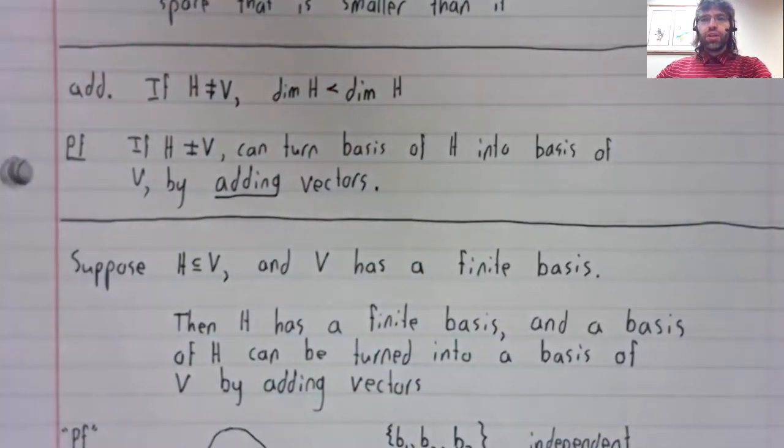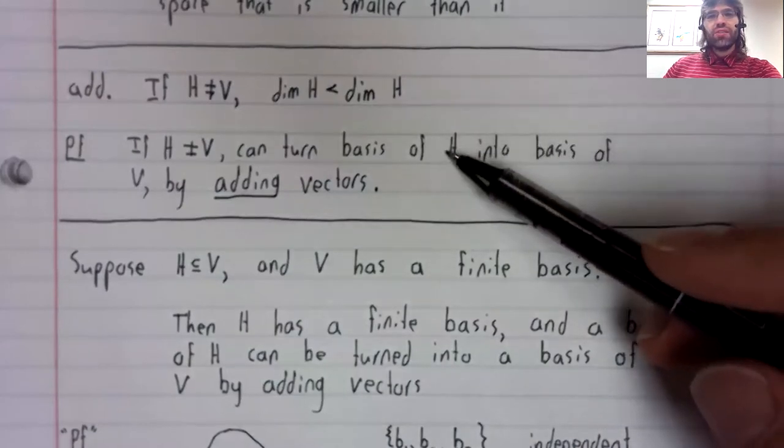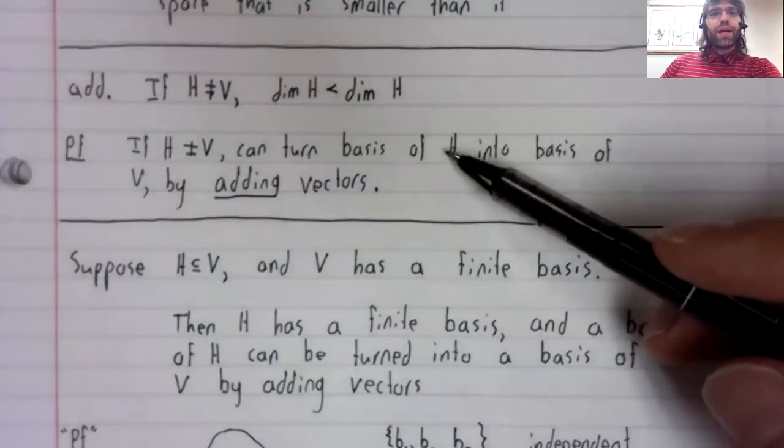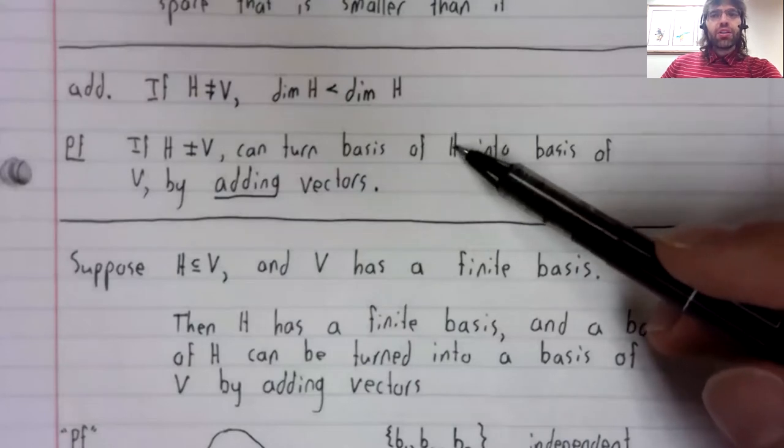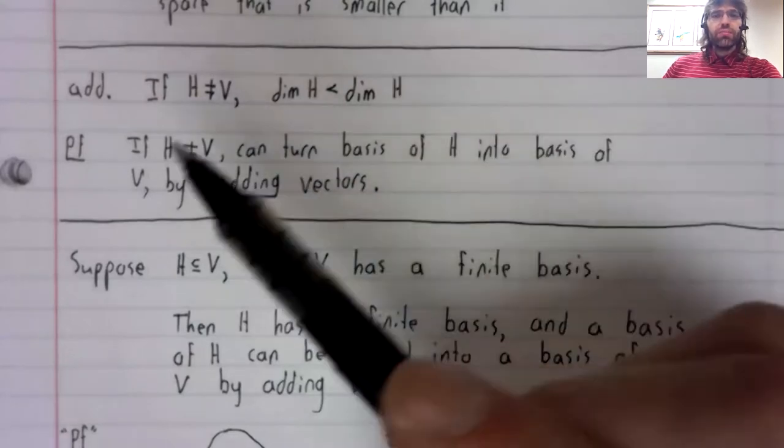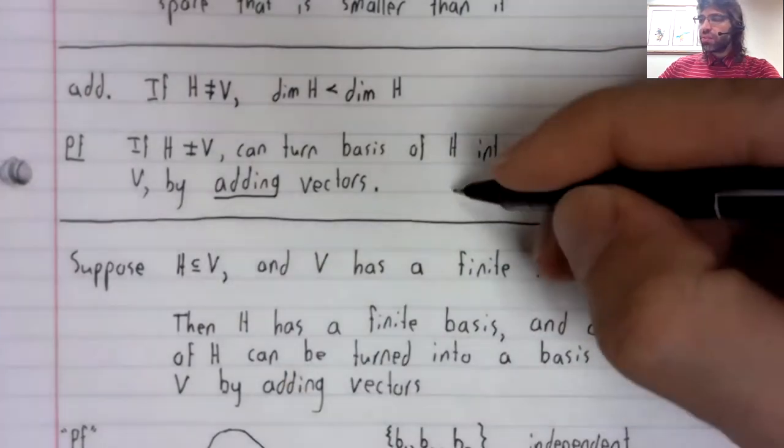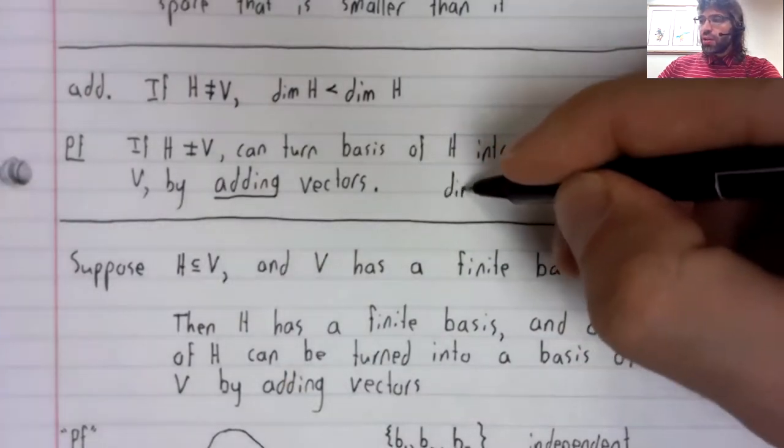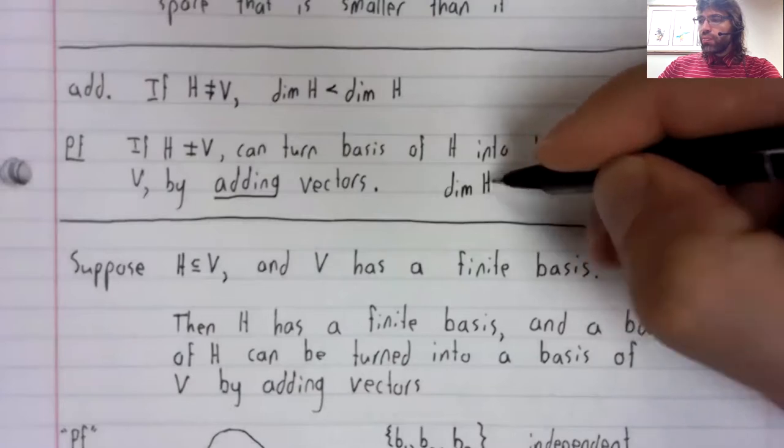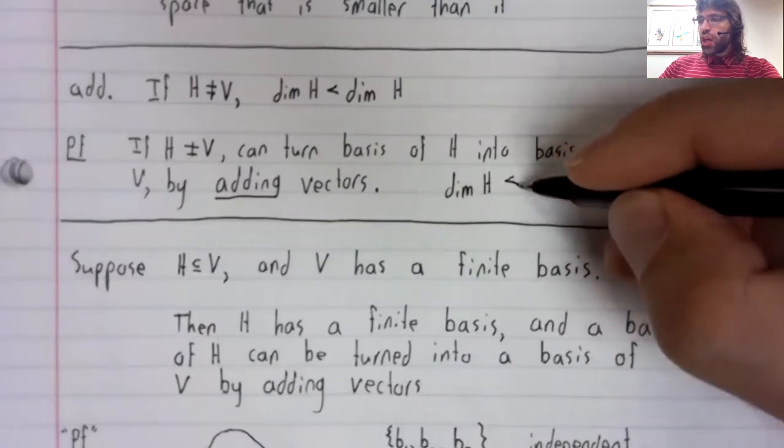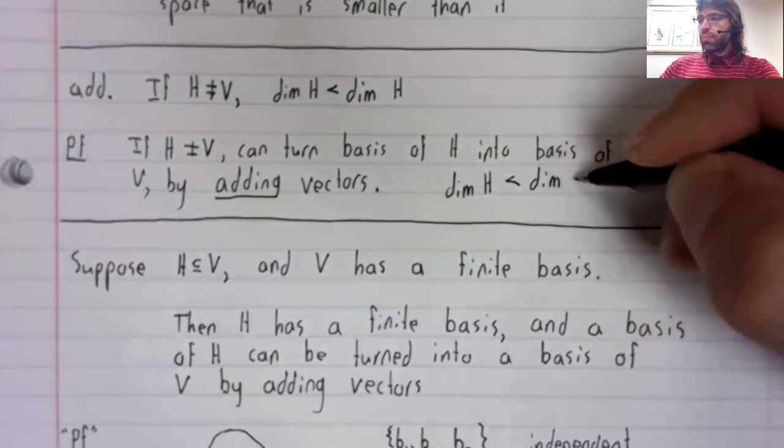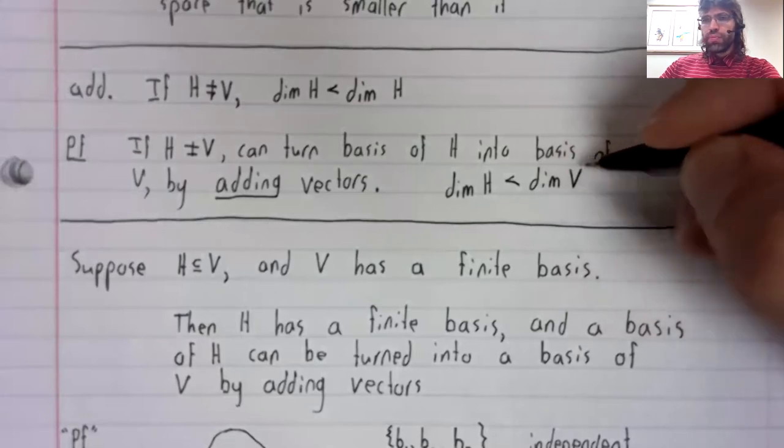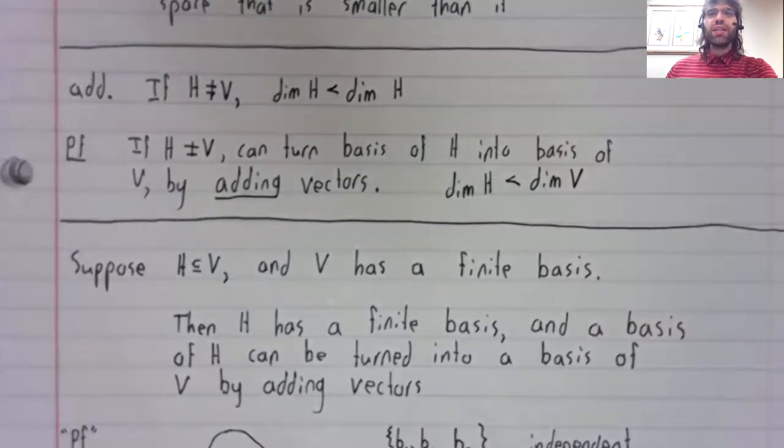So if we're taking this basis and we're adding vectors to it to get a basis of V, well, the basis we started with is smaller than the basis we get when we add more vectors.